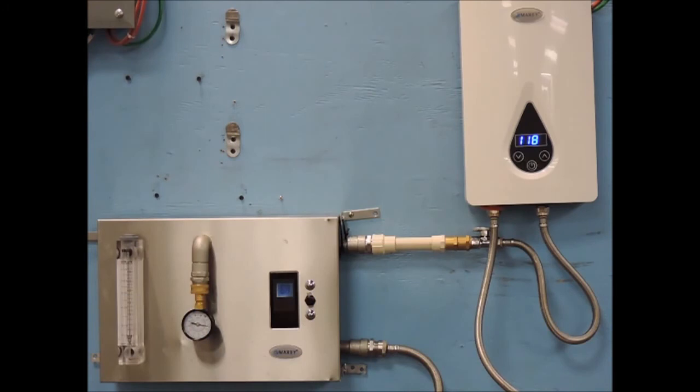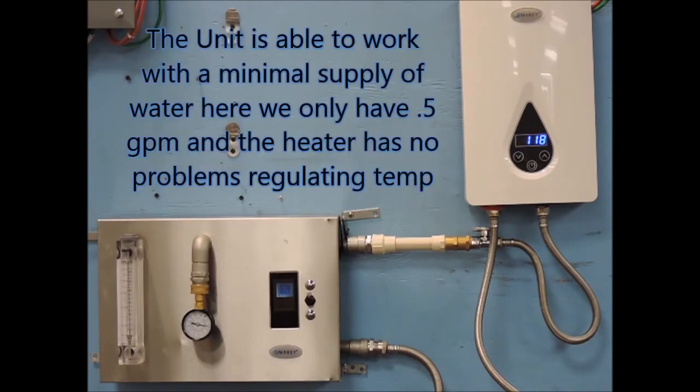As you can see here, our Eco 110 unit can operate with a flow rate of as little as one half a gallon per minute.